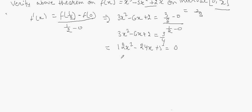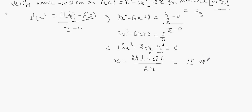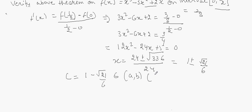If we solve this equation and find the values of X, we get X equals 24 plus or minus the square root of 336 over 24, which simplifies to 1 plus or minus the square root of 21 divided by 6. So C is equal to 1 minus the square root of 21 over 6.